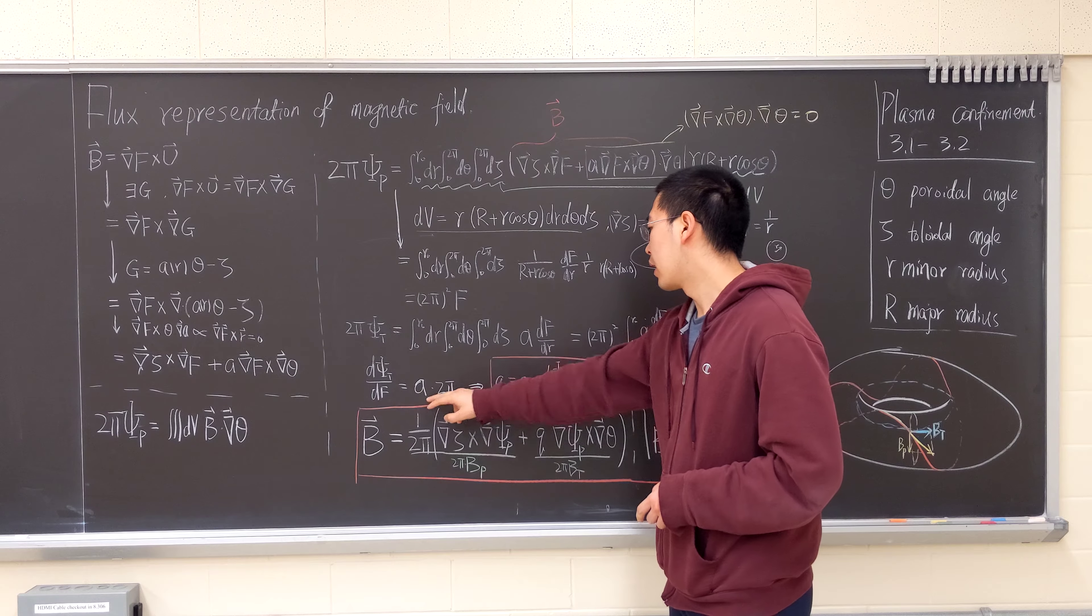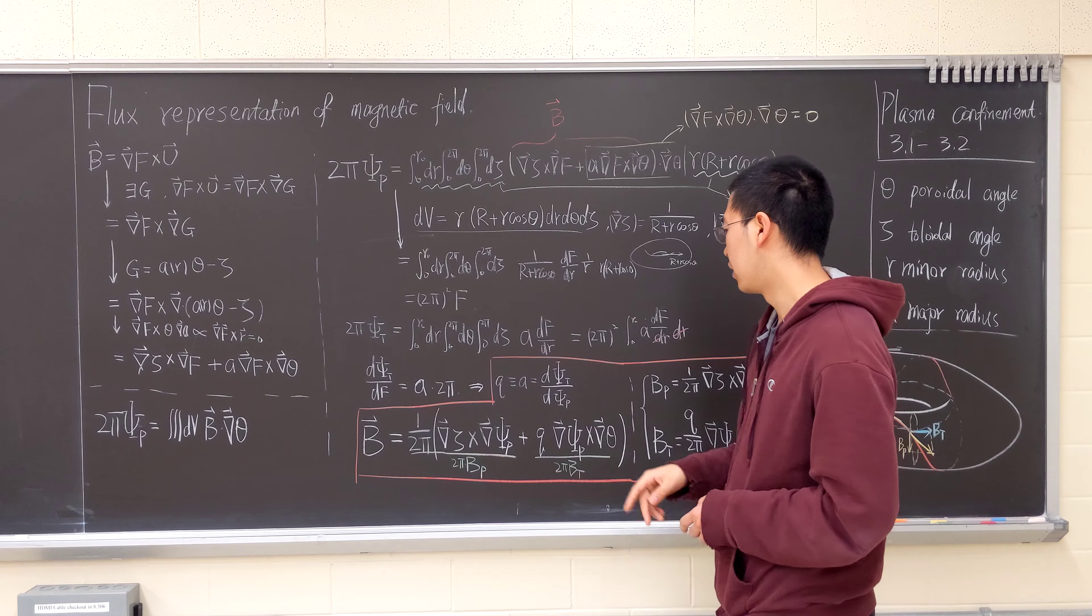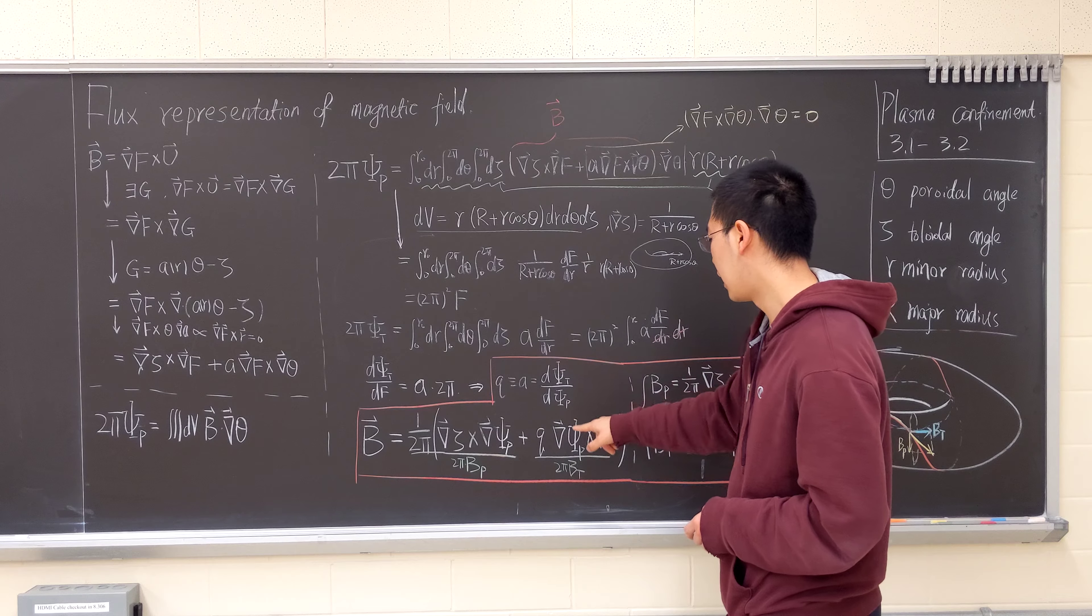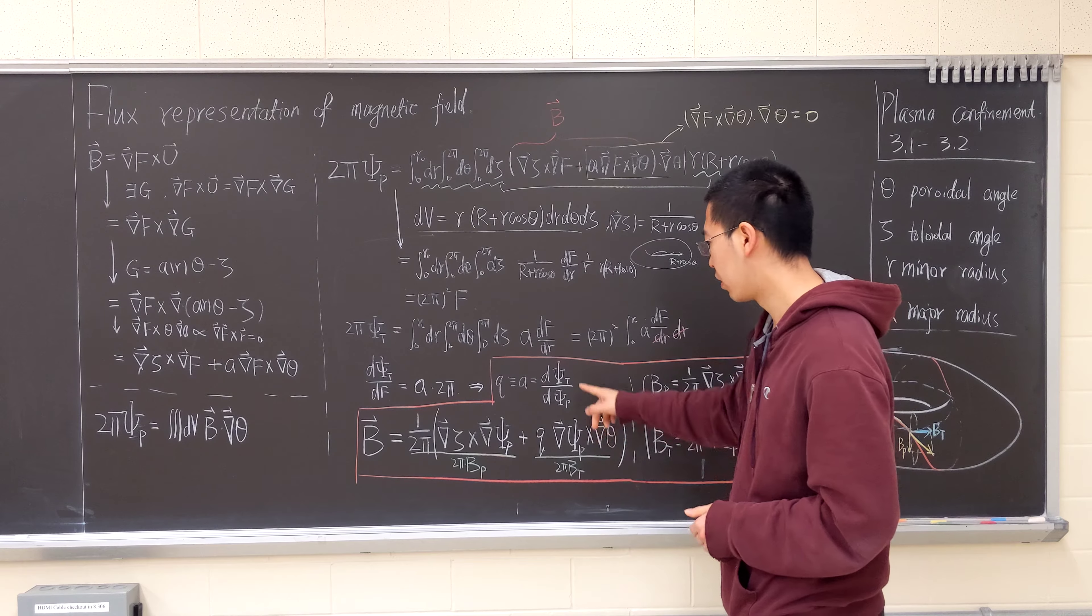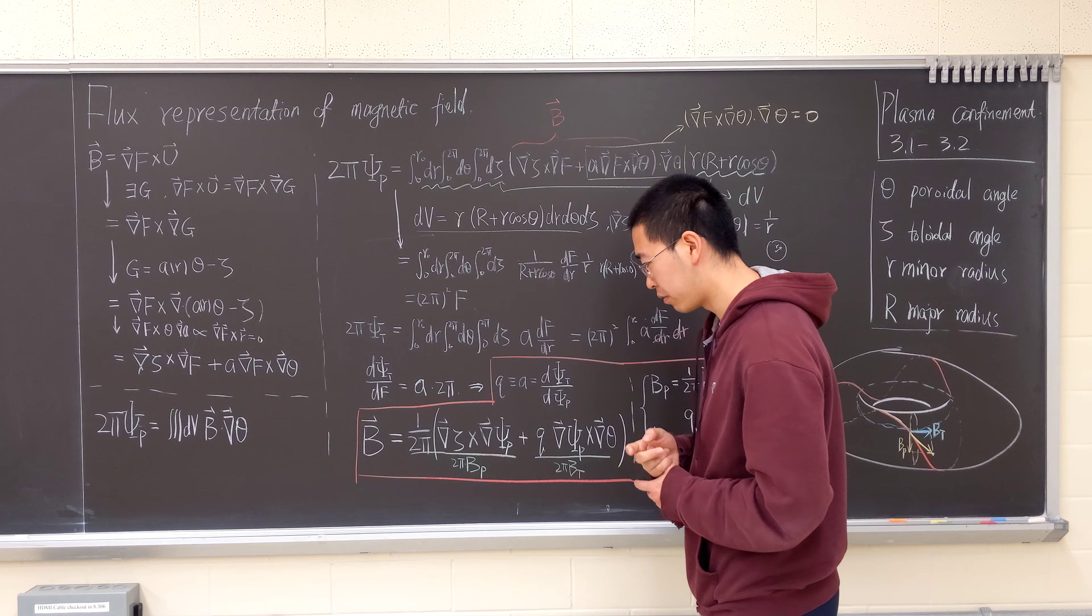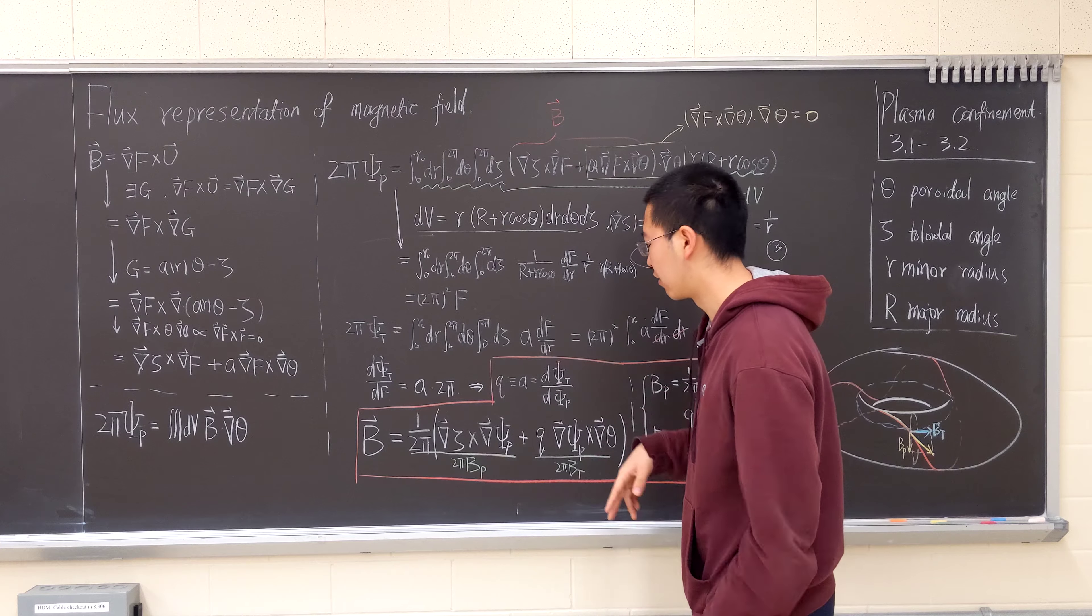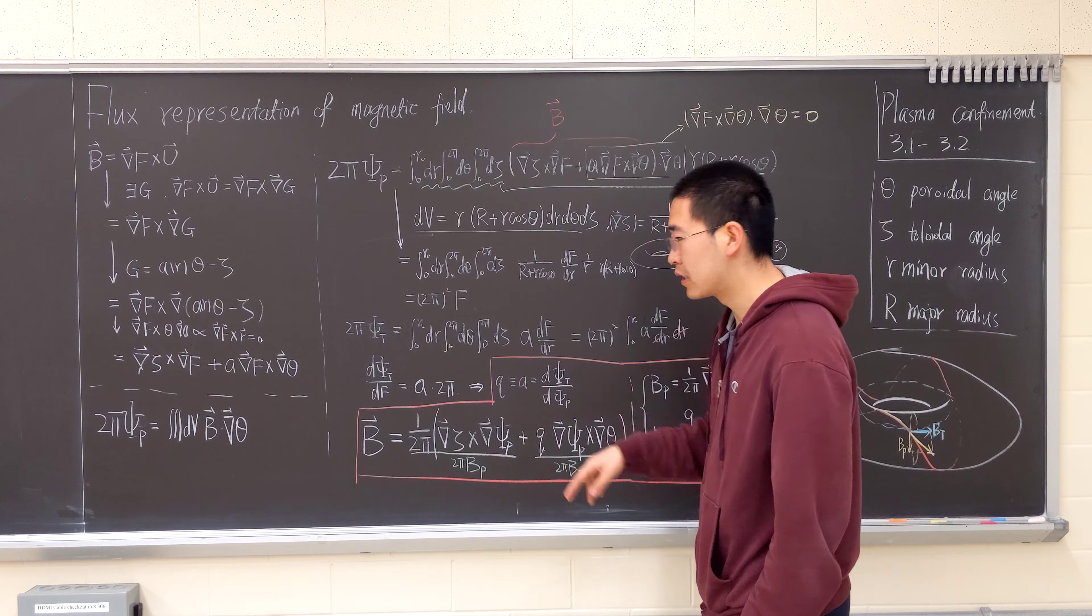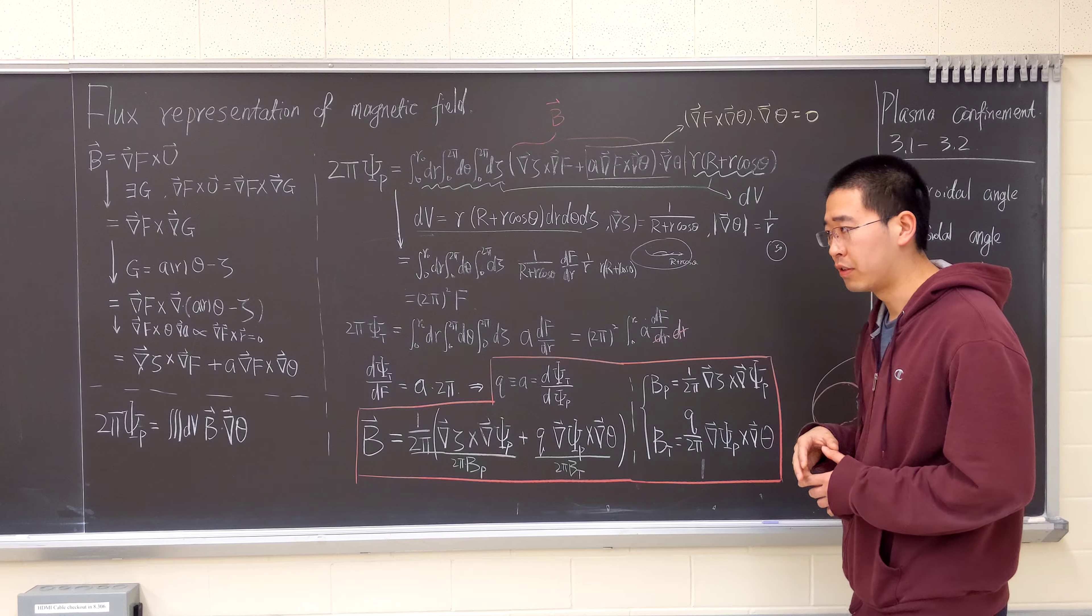Then A can be expressed in terms of toroidal flux over poloidal flux, derivative of poloidal flux. So these are d psi_t or d psi_p. And this is the definition of the safety factor.